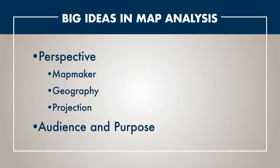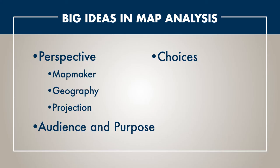The third big idea is choices. How does the map maker's perspective affect the things they put on the map — the decorations, how much of the earth they show, how much of the land, what places they include? All of those parts are very important to thinking about the map at a deeper level.